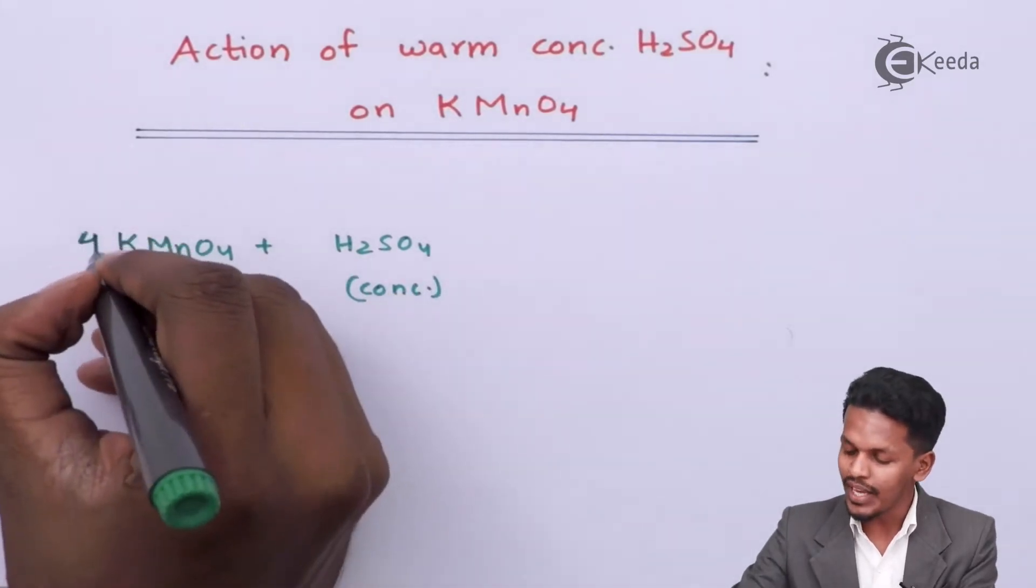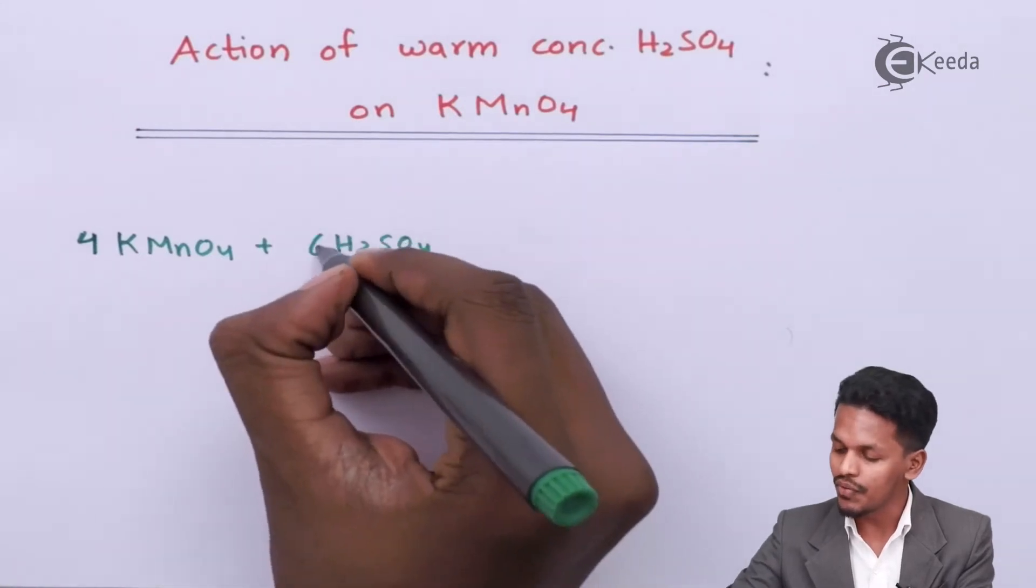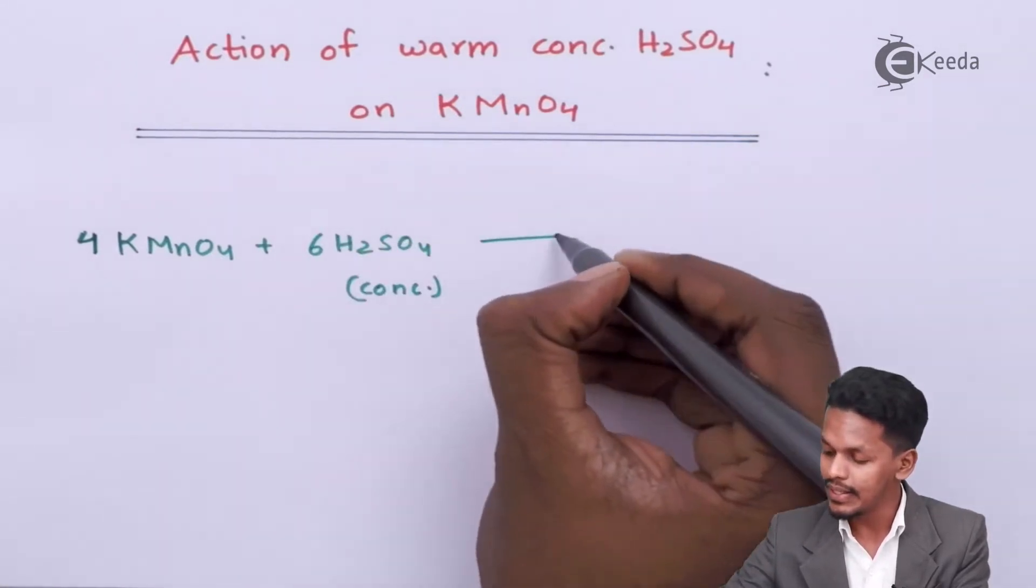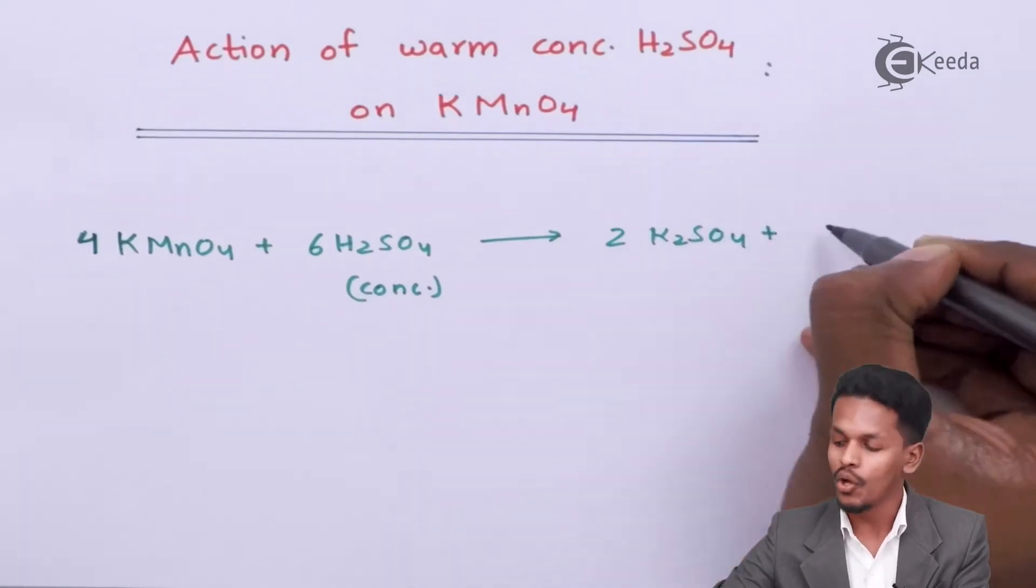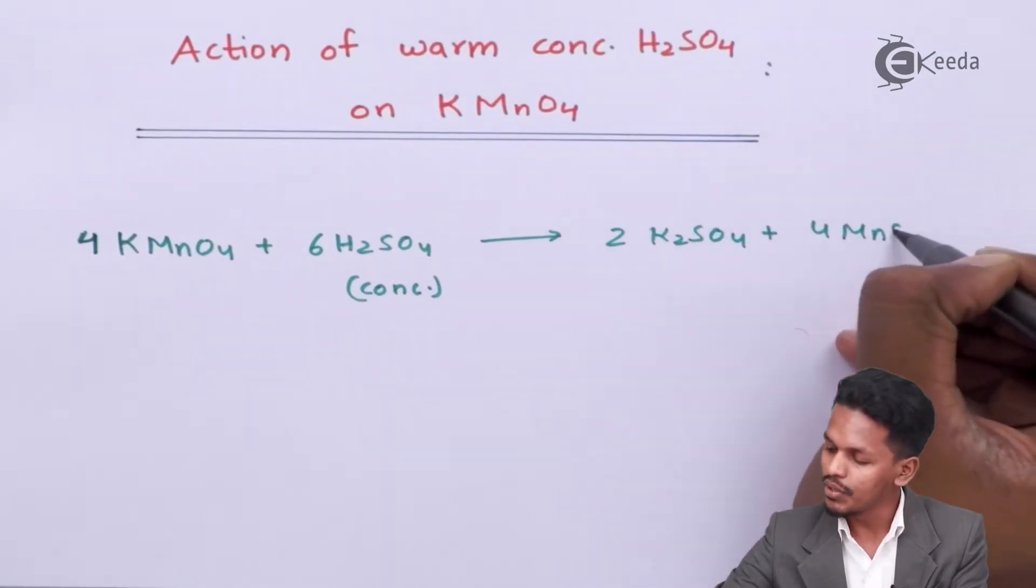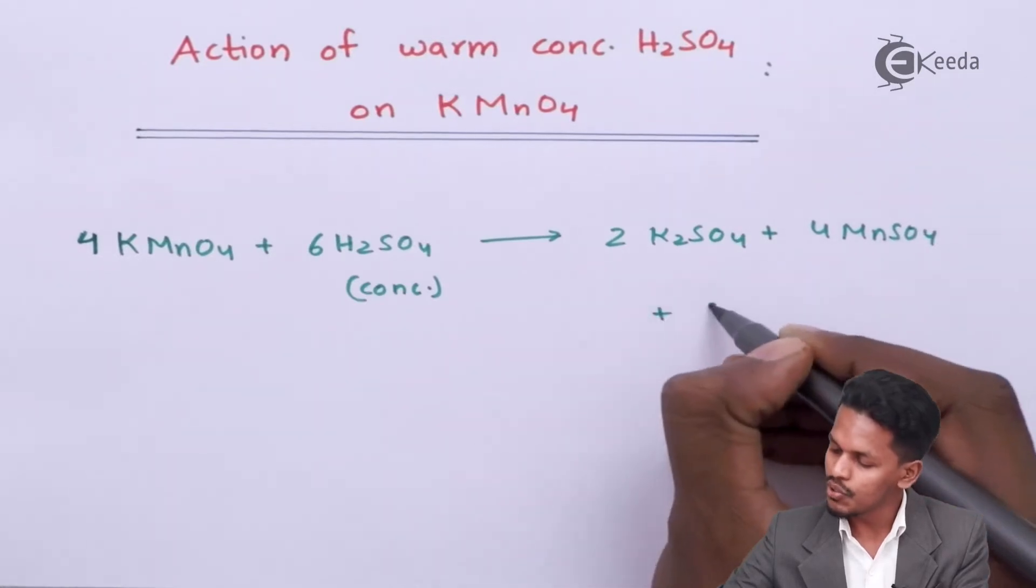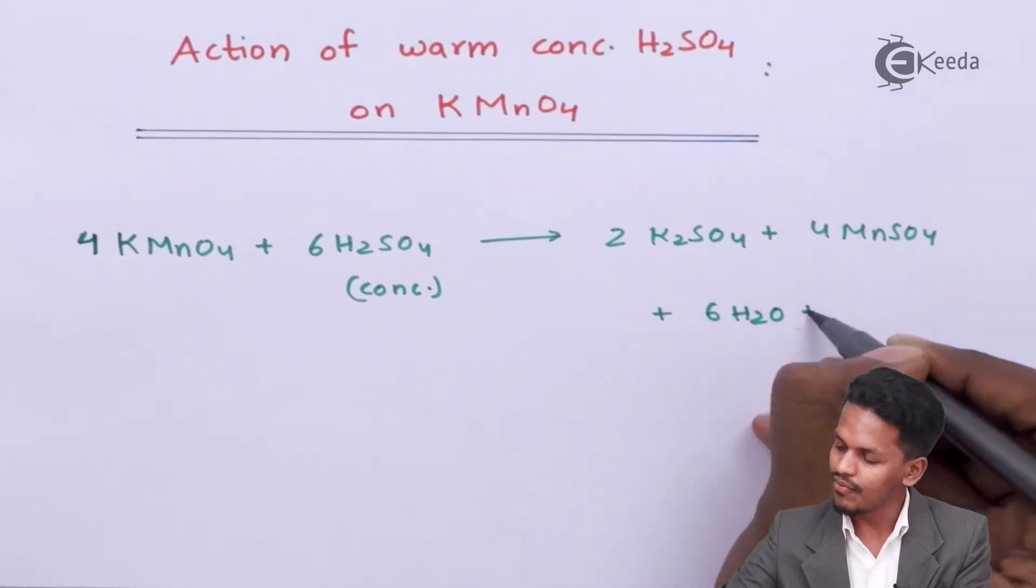4 moles of KMnO4 react with 6 moles of H2SO4 to give the main products: 2 moles of K2SO4, 4 moles of MnSO4, 6 moles of H2O, and 5 moles of O2.